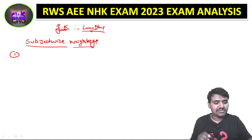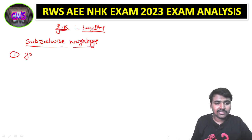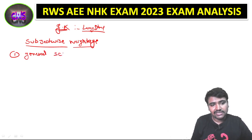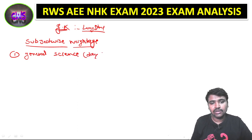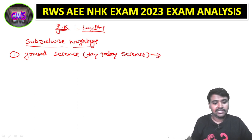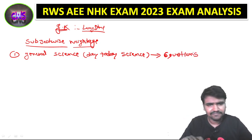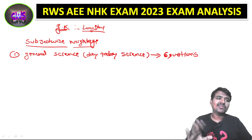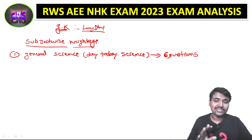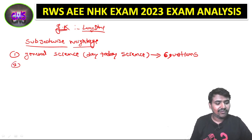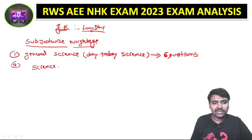So, subject-wise weightage of GK papers: the first subject I am going to cover is General Science. Day-to-day science — how many questions come directly? There are about 4 to 6 questions from day-to-day science. Now science is divided into 3 parts, with physics being the first part.